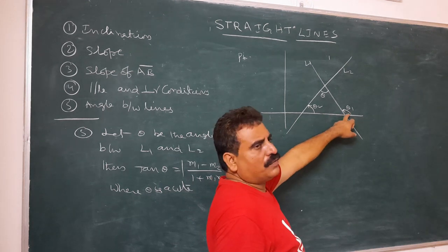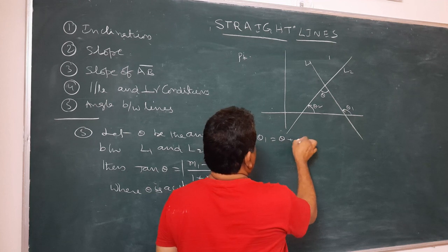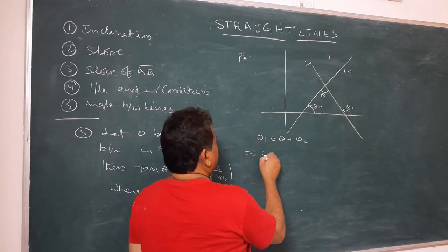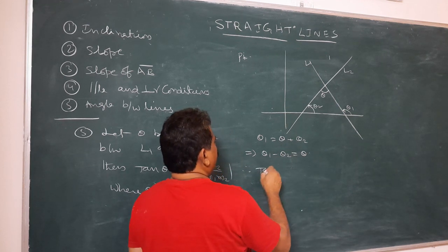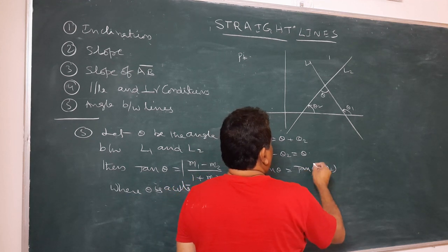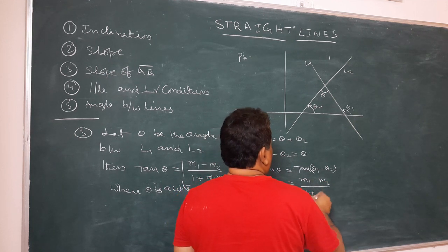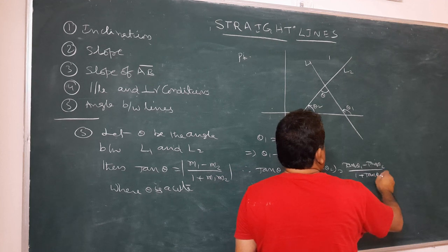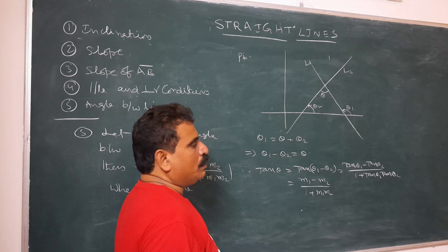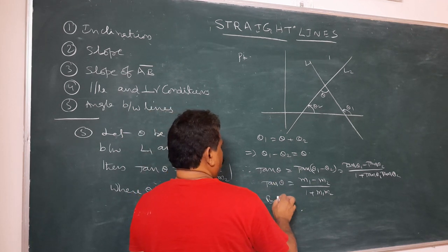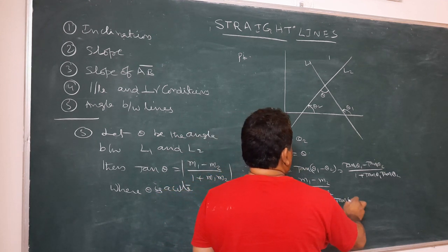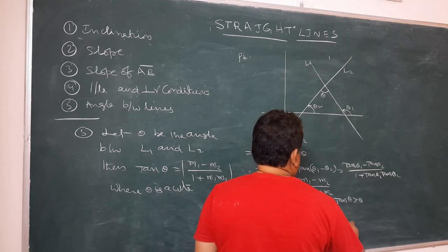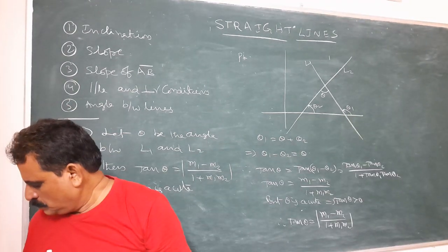Clearly θ₁ is the exterior angle of the triangle, so θ₁ = θ + θ₂. This implies tan(θ₁ − θ₂) = tan θ. Using the tan(A − B) formula: tan θ = (tan θ₁ − tan θ₂) / (1 + tan θ₁ tan θ₂) = (m₁ − m₂) / (1 + m₁m₂). Since θ is an acute angle, tan θ is positive, so tan θ = |(m₁ − m₂) / (1 + m₁m₂)|.